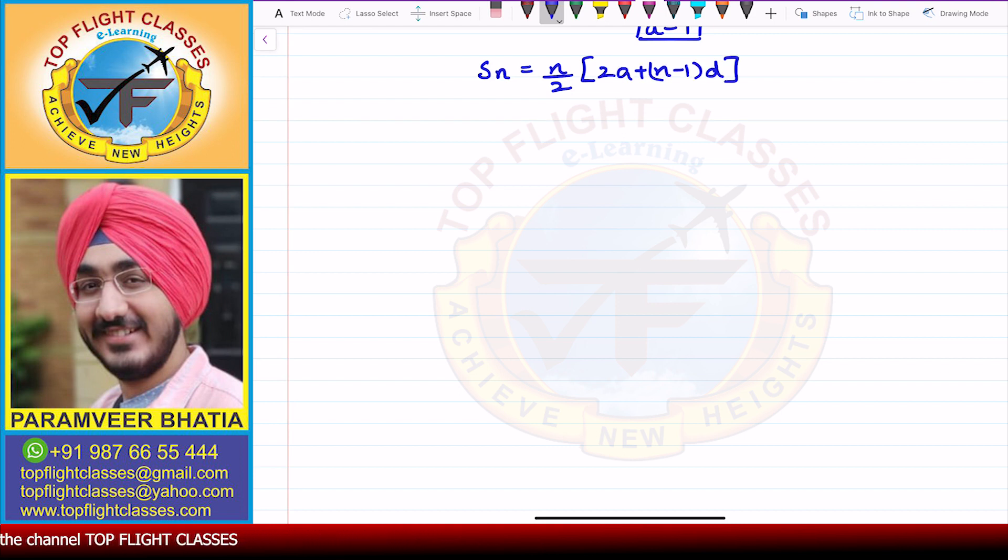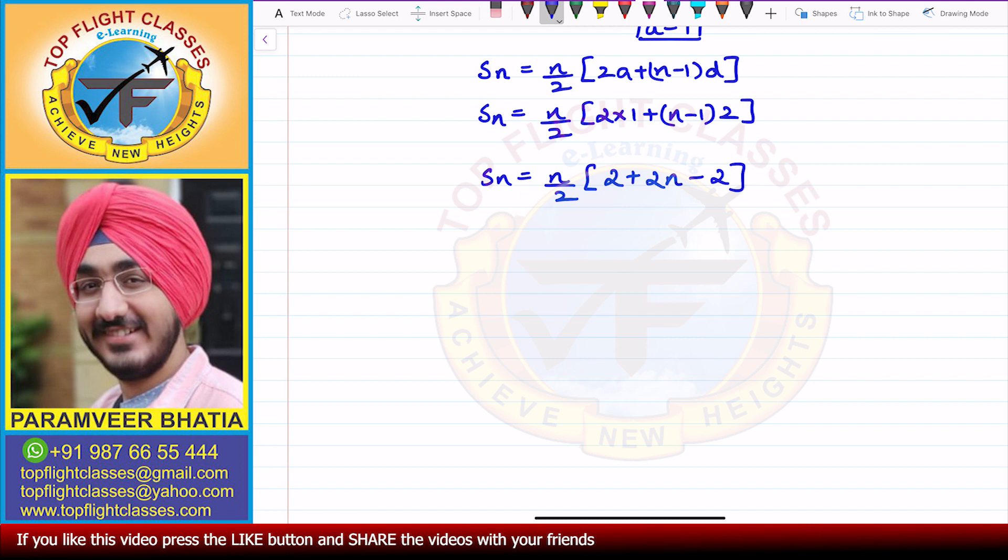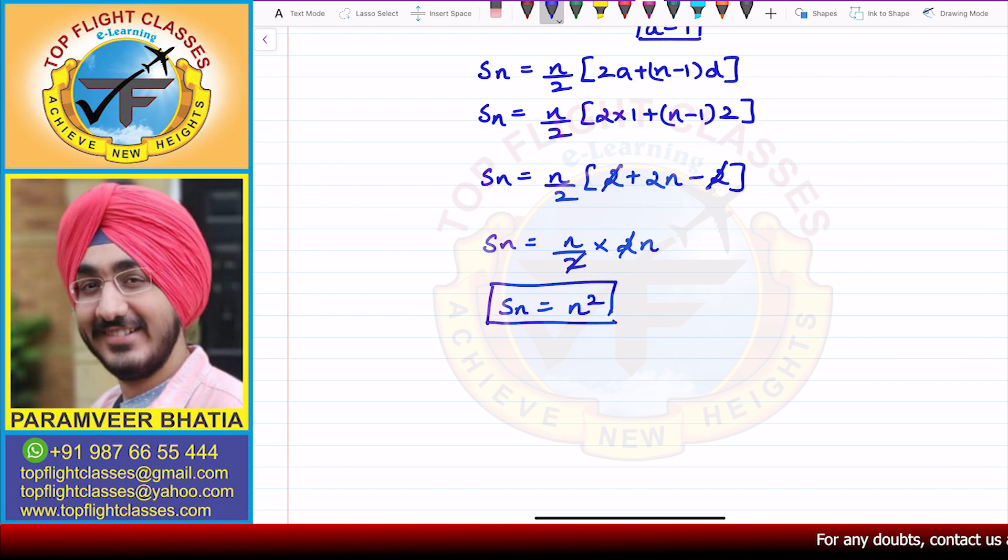So from here I get Sn equals n by 2 times 2a plus n minus 1 into d. So now I get a is 1, d value is 2, times 2 plus 2n minus 2. So from here 2 and 2 cancel. I get Sn equals n by 2 multiplied by 2n. So this 2 and this 2 again get cancelled. So Sn value comes out to be n square. So sum of first n terms of this AP in this case is n square.